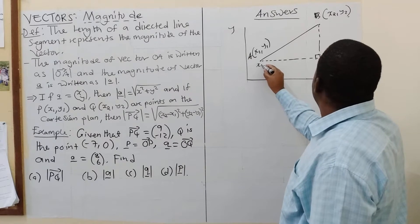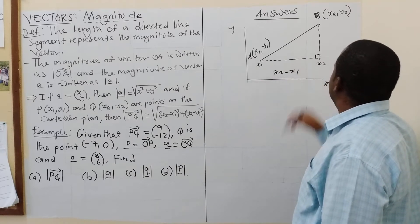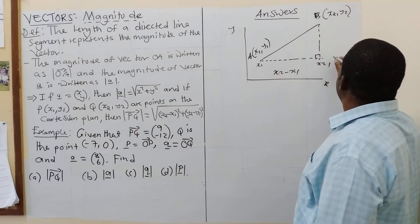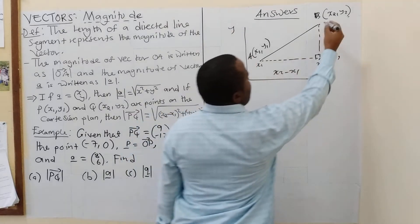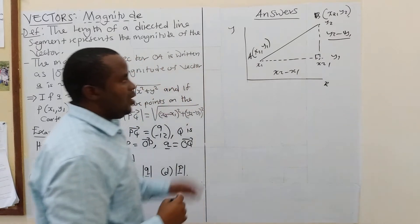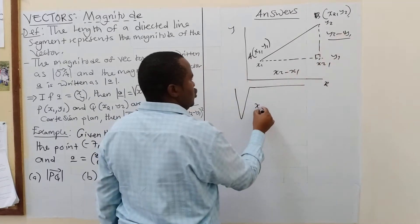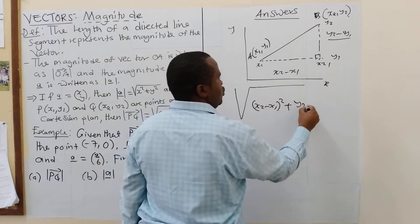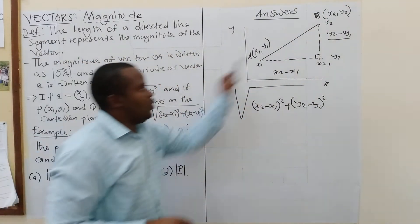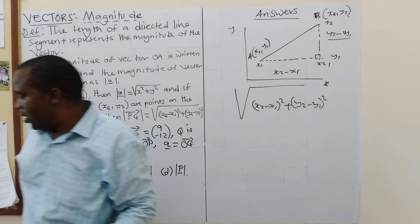At one end we have X1, and at the other point we have X2. So you subtract to find the horizontal distance: X2 minus X1. Similarly, here we have Y1 and Y2, so the vertical distance is Y2 minus Y1. To find the full distance, you find the sum of the two squares — that is (X2 minus X1) squared plus (Y2 minus Y1) squared — and take the square root. That is where these formulas come from.